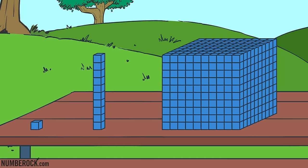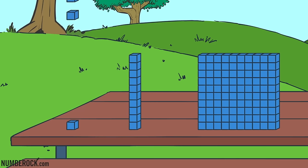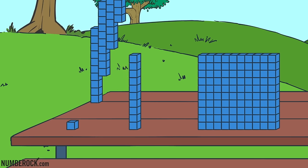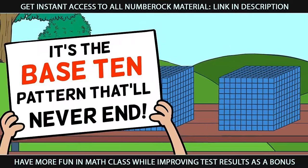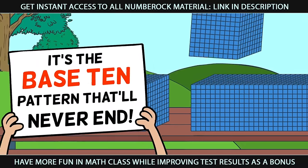And 10 hundreds will forever make 1,000 all together. So now let's review them: 10 ones make a 10, 10 tens make 100, and then 10 hundreds make 1,000. It's the base 10 pattern that'll never end.